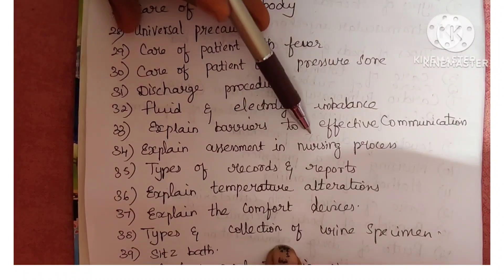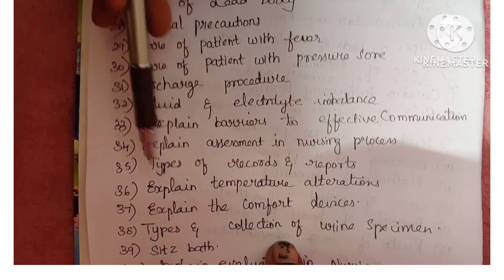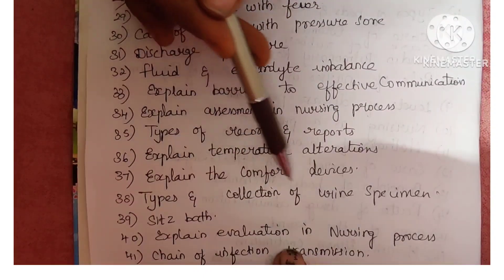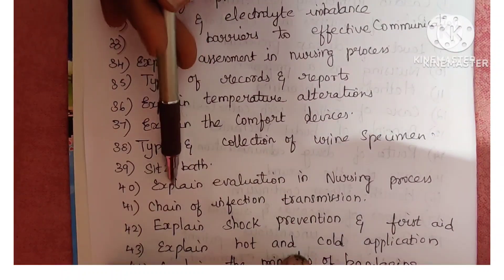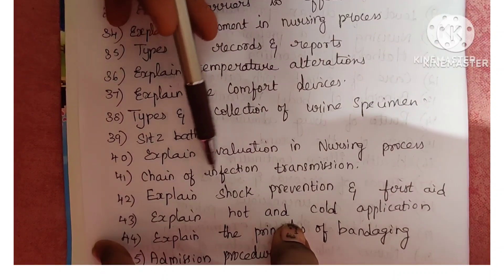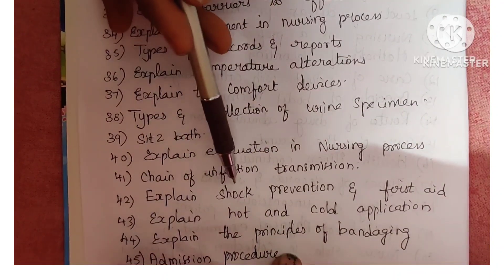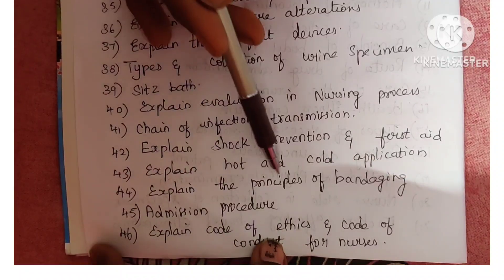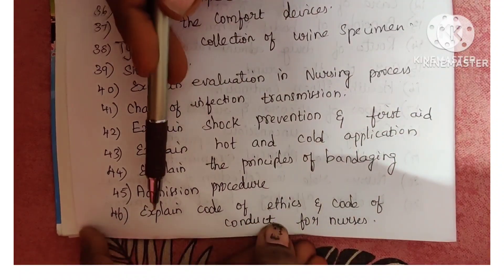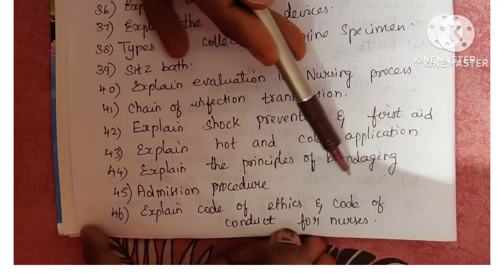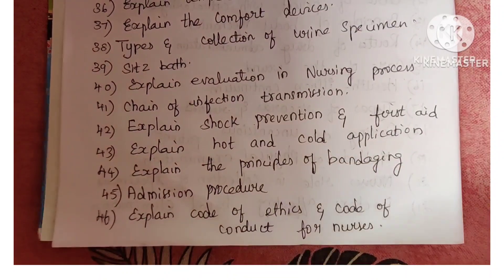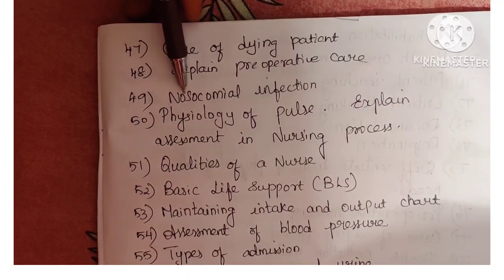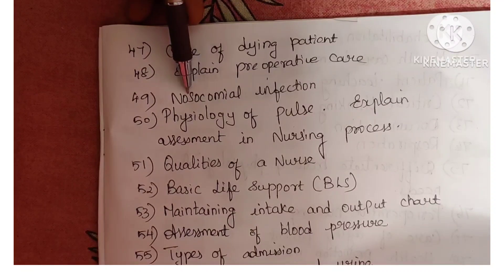Next is assessment in nursing practice. Next is chain of infection transmission. Next is types and collection of urine specimen. Next is sitz bath. Next is evaluation in nursing practice. Next is chain of infection transmission. Next is shock prevention and first aid. Next is hot and cold application. Next is principles of bandaging. Next is admission procedure. Next is code of ethics and code of conduct for nurses.